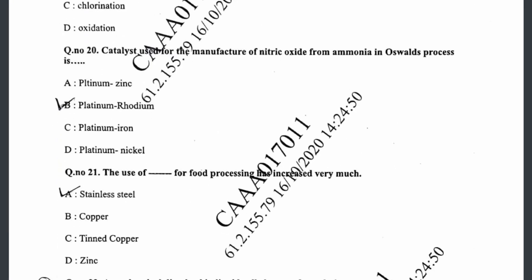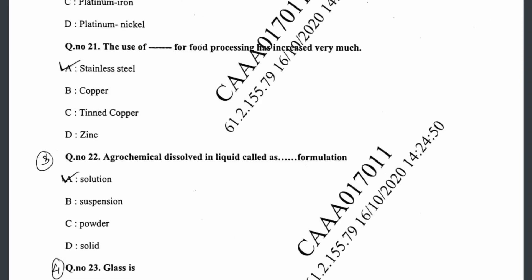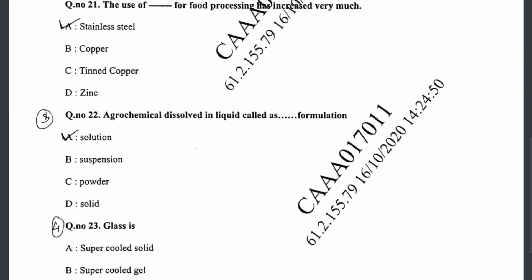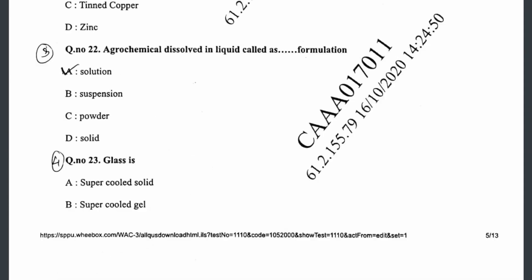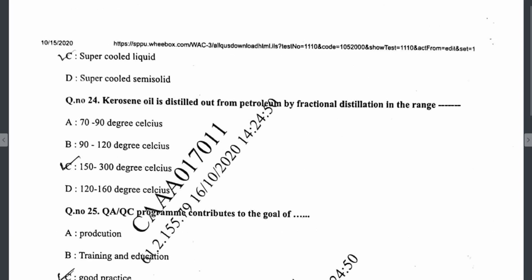Question twenty-one: the use of stainless steel is an option for food processing that is increasing. Question twenty-two: agrochemicals dissolved in liquid are called a solution formulation. Question twenty-three: glass is a supercooled liquid — that is option C. Question twenty-four: kerosene oil is distilled from petroleum by fractional distillation in the range of 150 to 300 degrees Celsius.